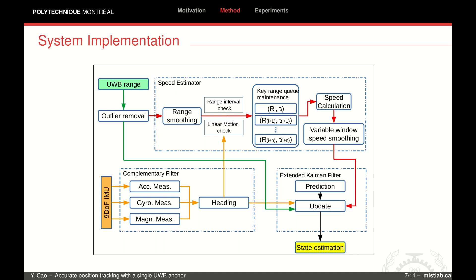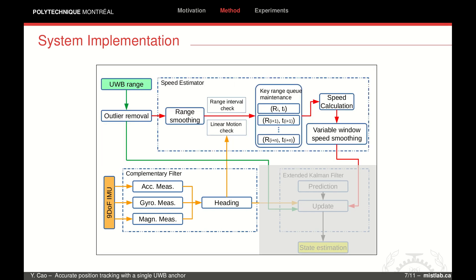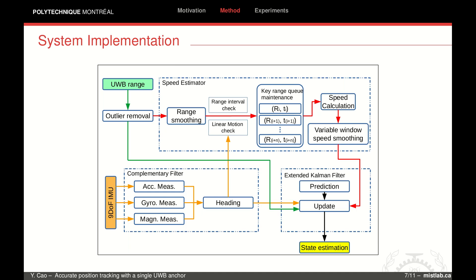This block diagram shows our localization system. Three modules are involved. A complementary filter provides a quaternion estimation of the orientation using algebraic solutions from angular velocity, the observation of gravity, and magnetic field. This heading helps the speed estimator to detect linear motion and then estimate the speed using the before-mentioned strategy. The estimated speed, heading, and original range measurements are fused into the final extended Kalman filter to estimate the robot state.